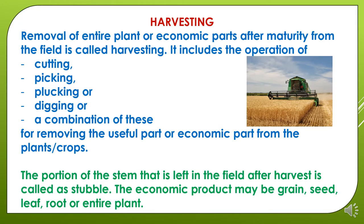What is harvesting? Removal of entire plant or economic parts from a plant after maturity from the field is called harvesting. The harvesting process includes operations like cutting, picking, plucking, digging, and combinations of all of the above. In case of cotton, picking is known as harvesting. In case of vegetables, plucking is the harvesting. In case of potato and groundnut, digging is the harvesting process, and in case of other crops like rice and wheat, cutting is the harvesting process.